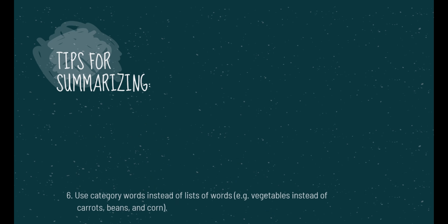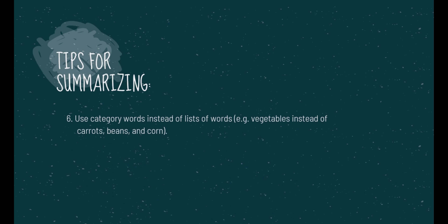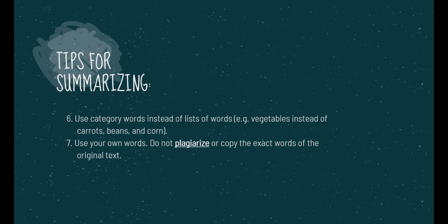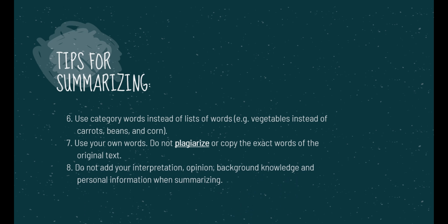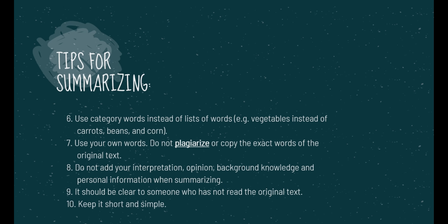Number 6: Use category words instead of a list of words — for example, 'vegetables' instead of 'carrots, beans, and corn.' Number 7: Use your own words. Don't plagiarize or copy the exact words of the original text. Number 8: Don't add your interpretation, opinion, background knowledge, and personal information when summarizing. Number 9: It should be clear to someone who has not read the original text. Number 10: Keep it short and simple.